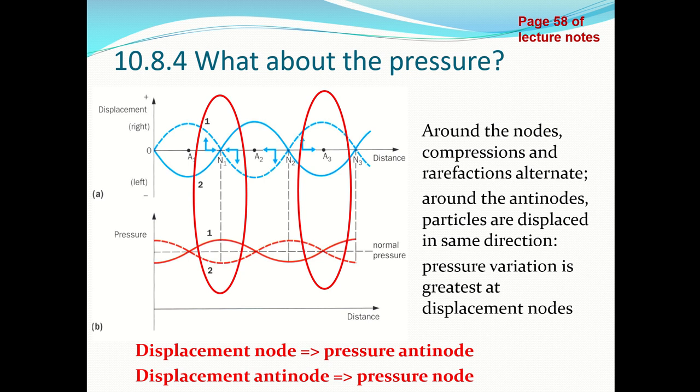So a displacement node corresponds to a pressure antinode, and a displacement antinode corresponds to a pressure node.